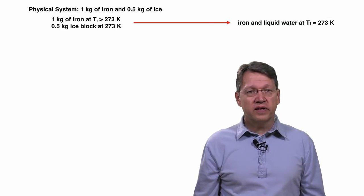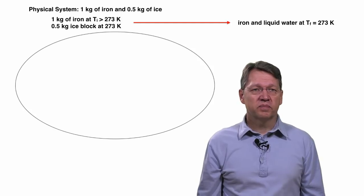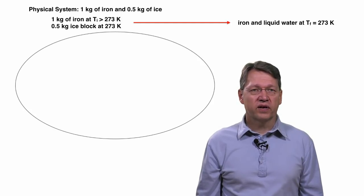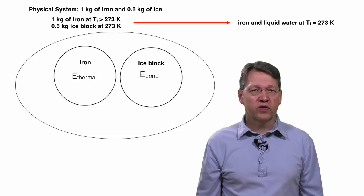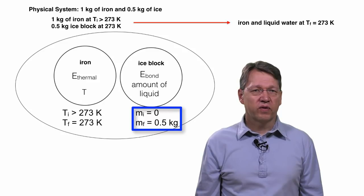Since they are in an insulated container, this is a closed system, so we draw a solid line around everything. There are two energy systems that are changing, the thermal energy of the iron and the bond energy of the ice. We know that the initial amount of water was 0 kilograms and the final amount was half a kilogram.